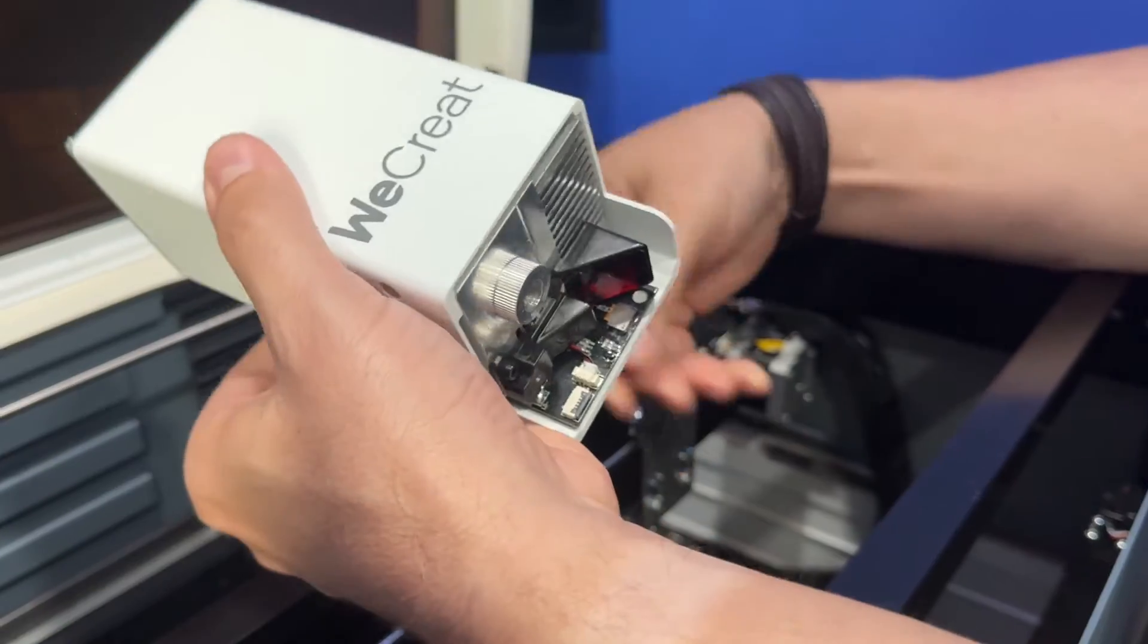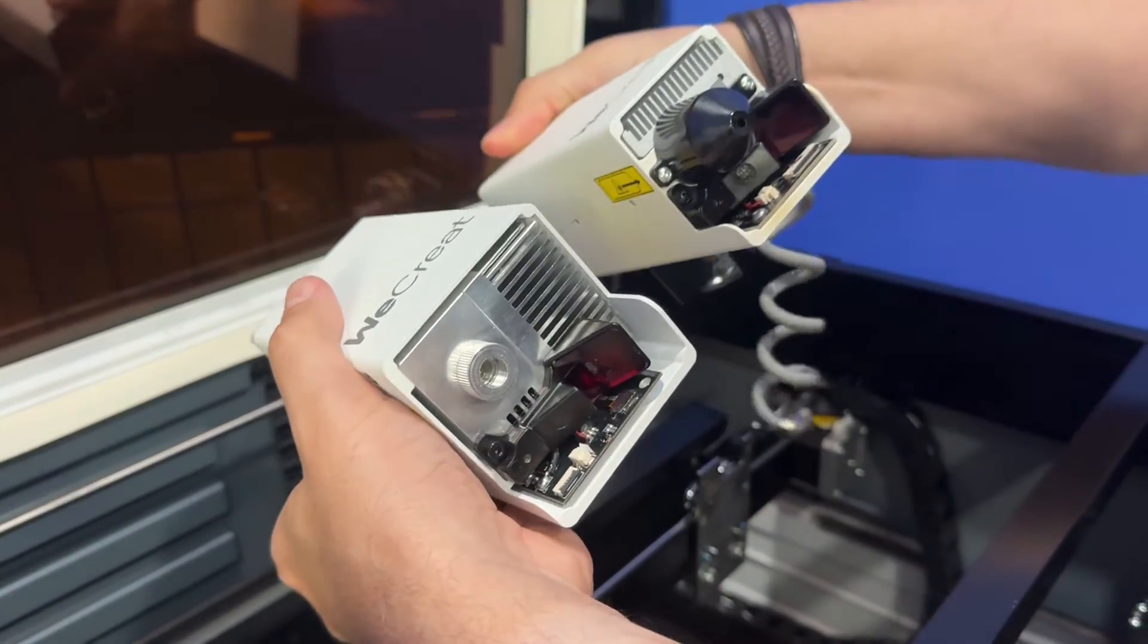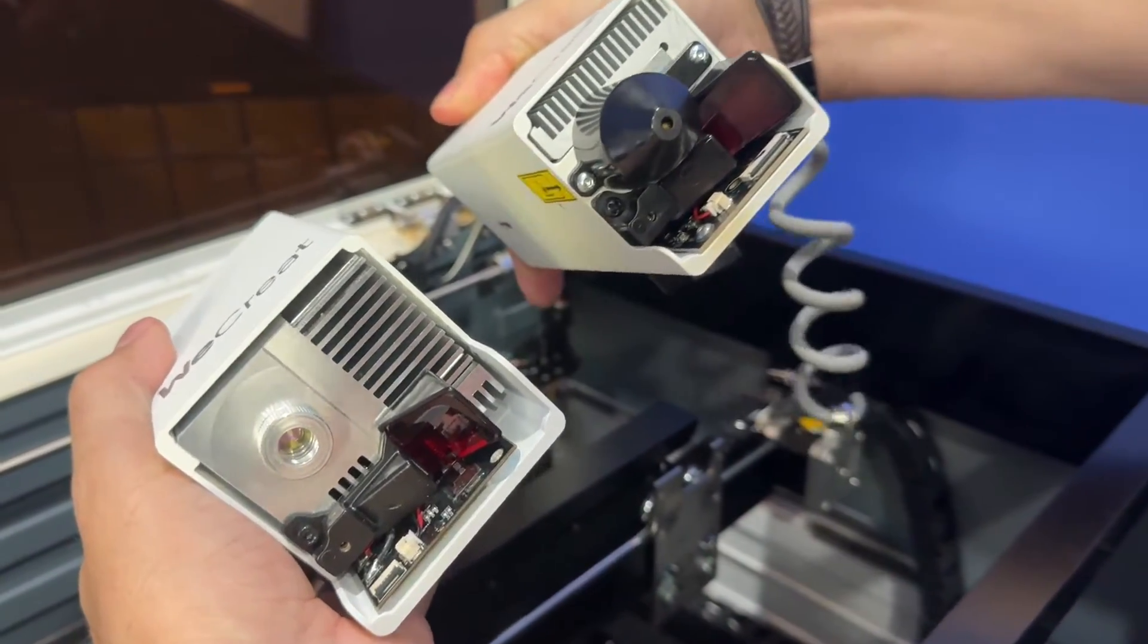We can do some stainless steel stuff on our kitchen stuff, on knives. I think we can do plastic as well. Let's take our other module out, put this in, see what we can do with this thing.